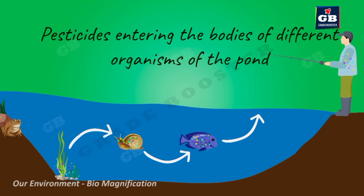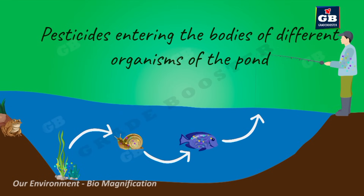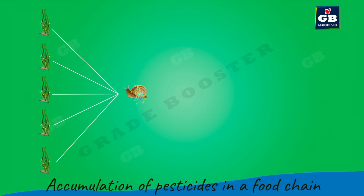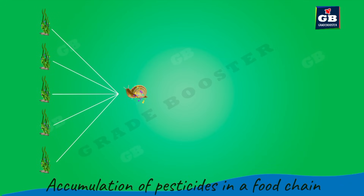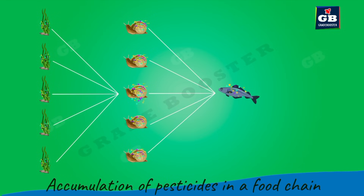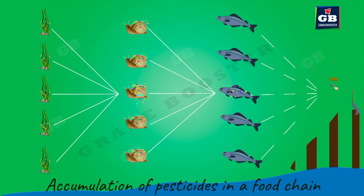The amount of pesticide residues increases as we go up in a food chain. A snail may eat many such polluted plants in its lifetime, so poisonous chemicals enter the snail's body. The chemical deposits in the snail are higher than in each individual aquatic plant. Then fish eat large quantities of contaminated snails in their lifetime, accumulating even more chemical deposits in their bodies.